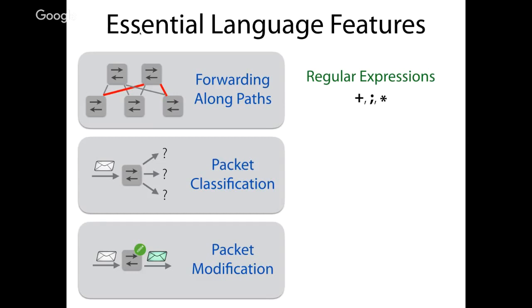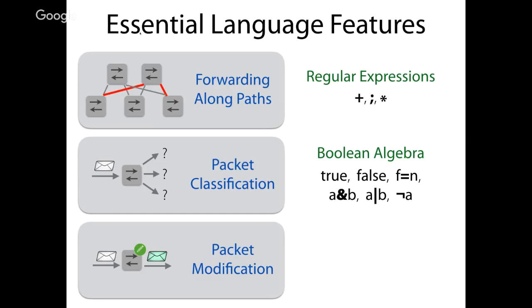We also need to classify packets based on values in their fields to make forwarding decisions. There's already an existing formal system for that: a boolean algebra. NetKAT has this boolean algebra built in. We have primitives: 'true' matches all packets, 'false' matches none, and importantly the test 'f = n' matches all packets whose field f equals value n. We also have standard boolean connectives — conjunction, disjunction, and negation — allowing us to build arbitrary boolean predicates.